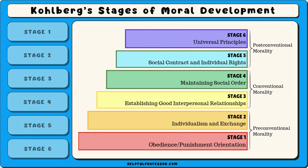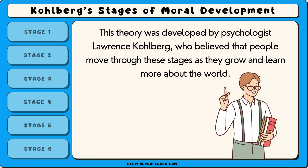The stages progress from a basic understanding of morality based on avoiding punishment to a more advanced view focused on universal ethical principles. This theory was developed by psychologist Lawrence Kohlberg, who believed that people move through these stages as they grow and learn more about the world.